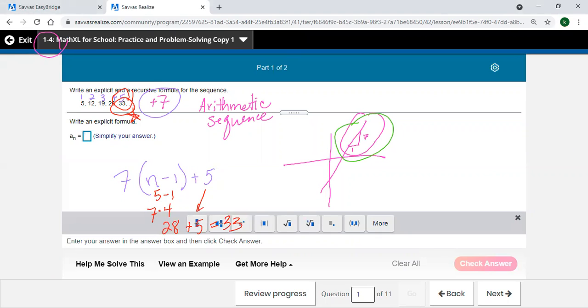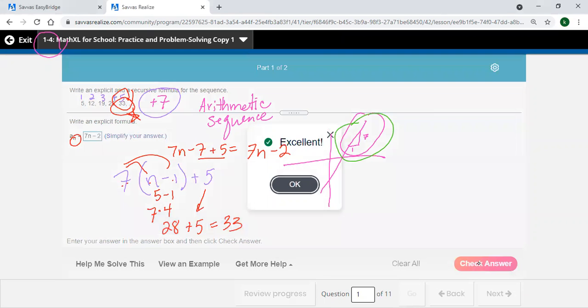We've got to put our formula in here in a simplified form though. Back over here, this would be distributing 7n minus 7. 7 times this n, 7 times that 1, and then plus 5. Combine these two like terms. So 7n minus 2 is what I'm typing in here for my answer. The way I know to use an n in this problem is the fact that there's this little subscript n right here. Let's see how we did. Check it. And we got it.